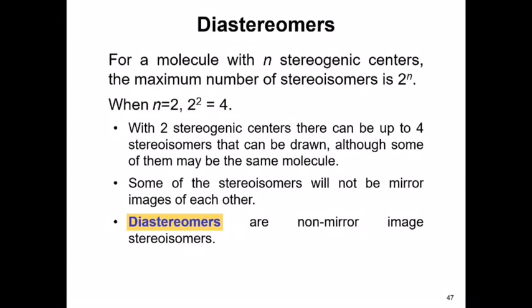Some of the stereoisomers will not be mirror images of each other, and these are the diastereomers. So diastereomers are non-mirror image stereoisomers.